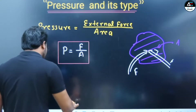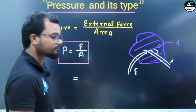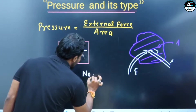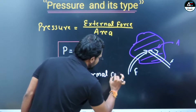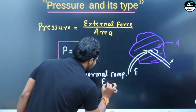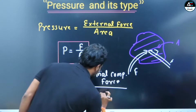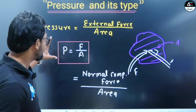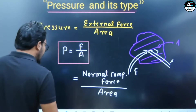If you want to write the full definition, pressure is the normal compressive force per unit area. This is clear — pressure is force upon area.